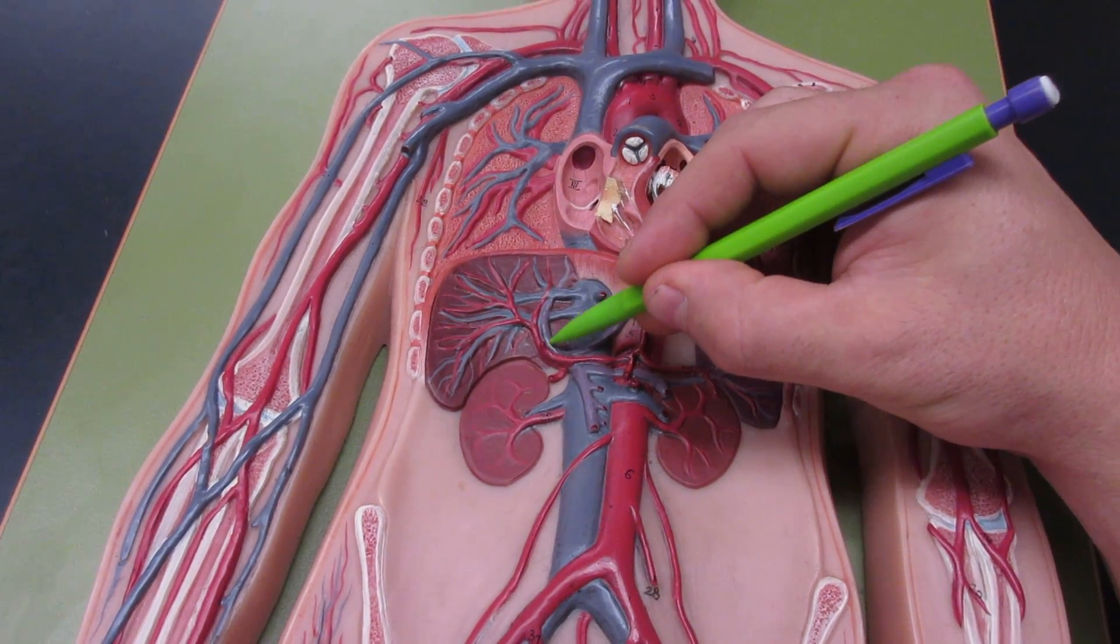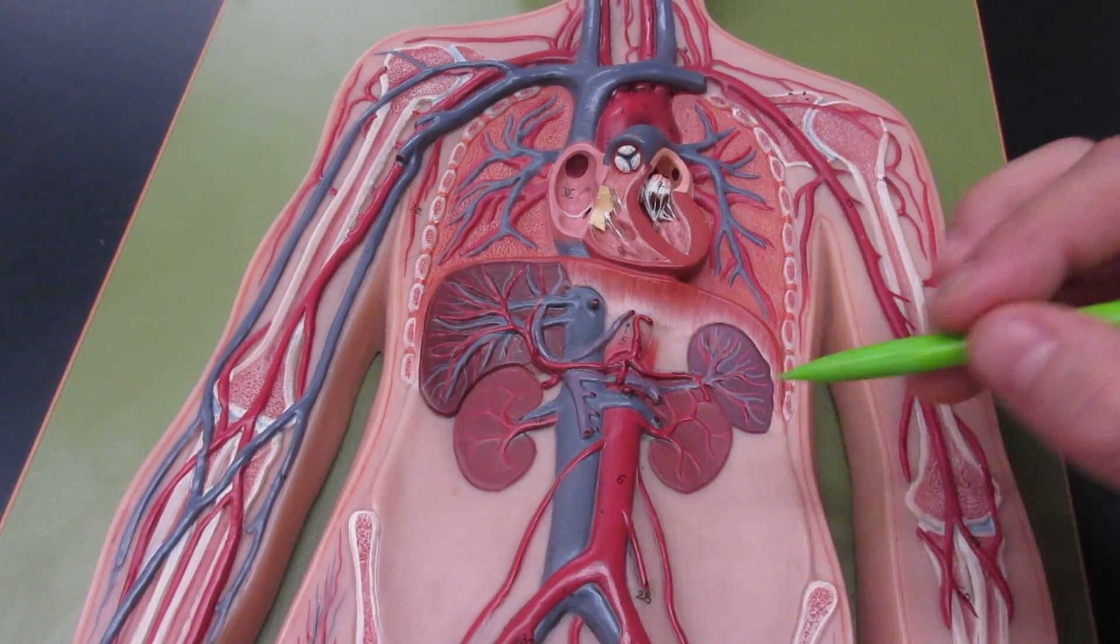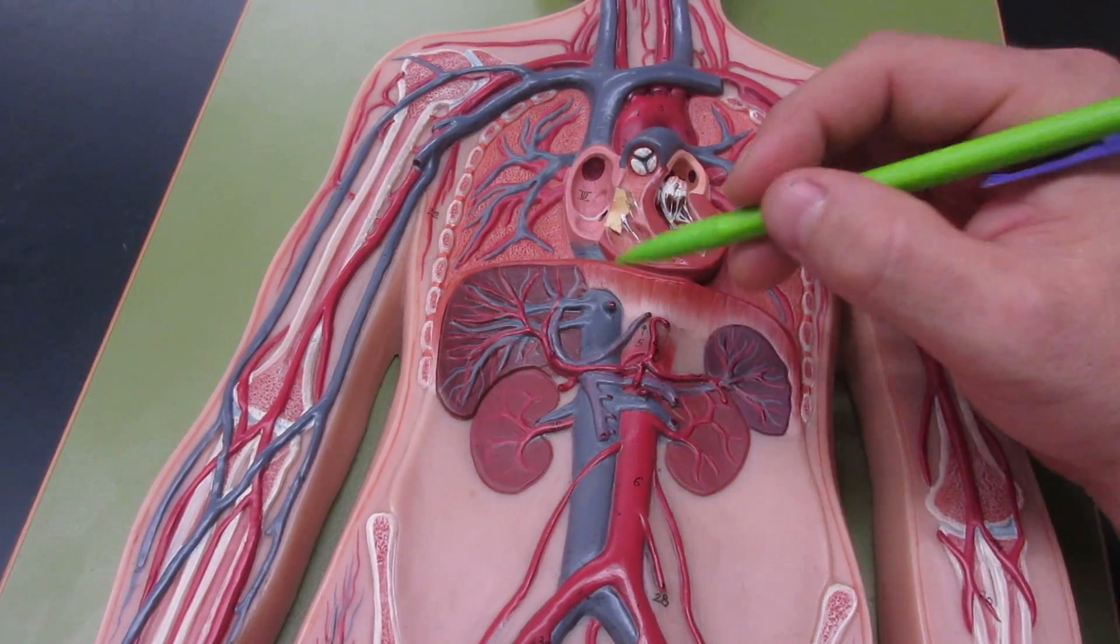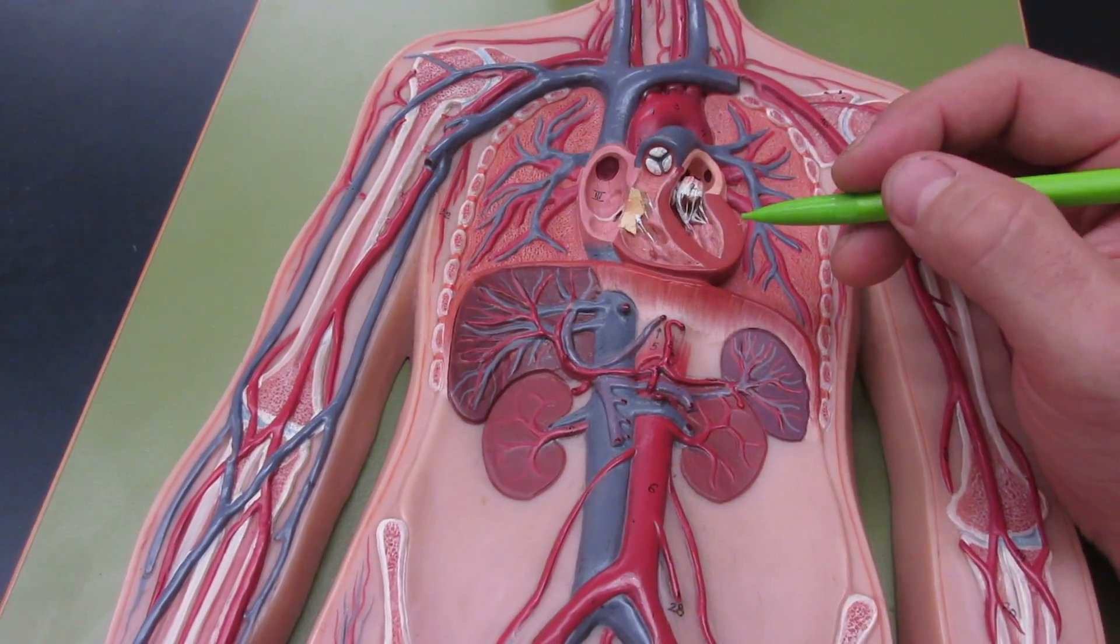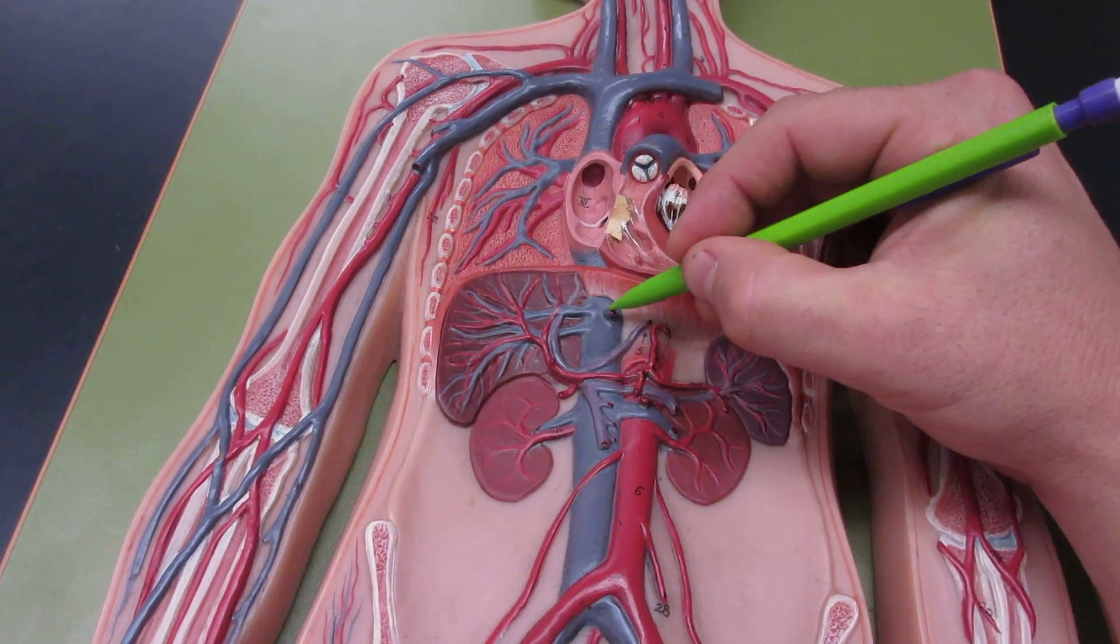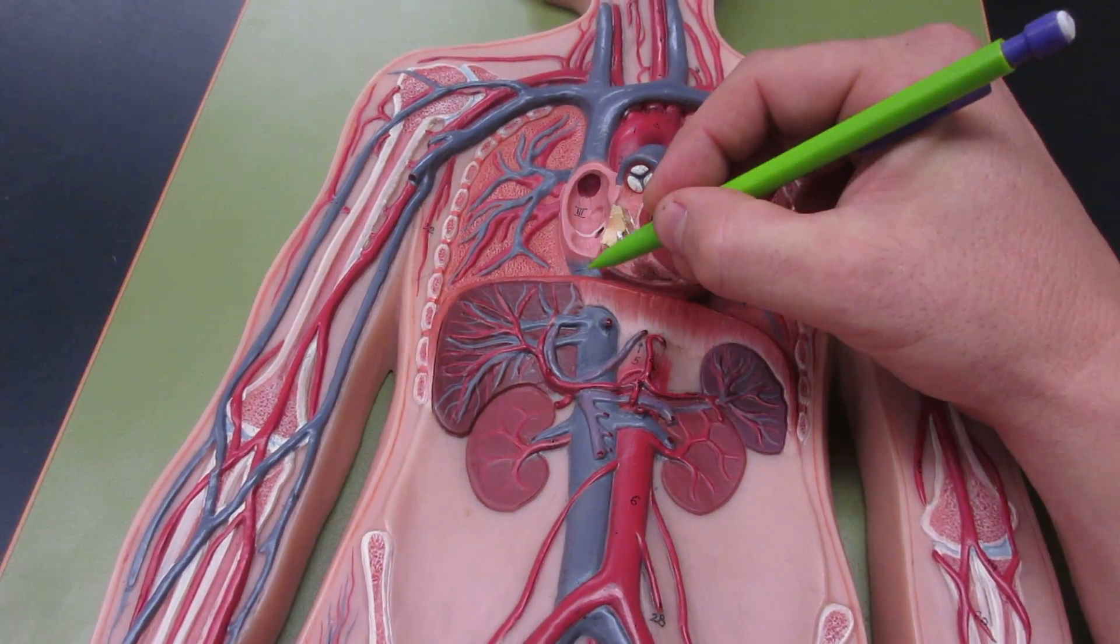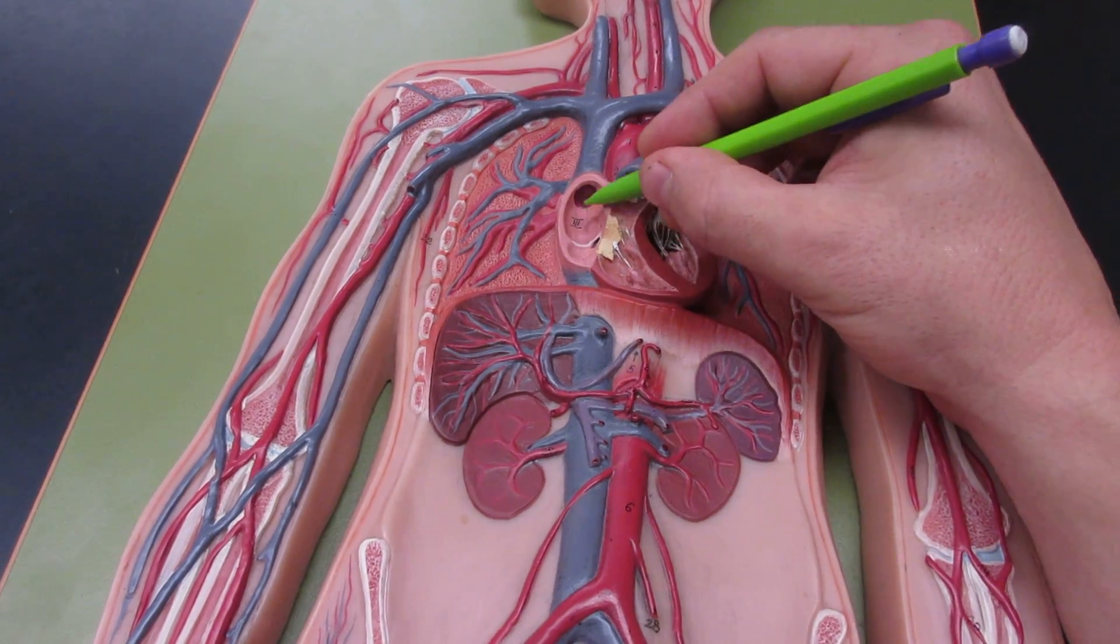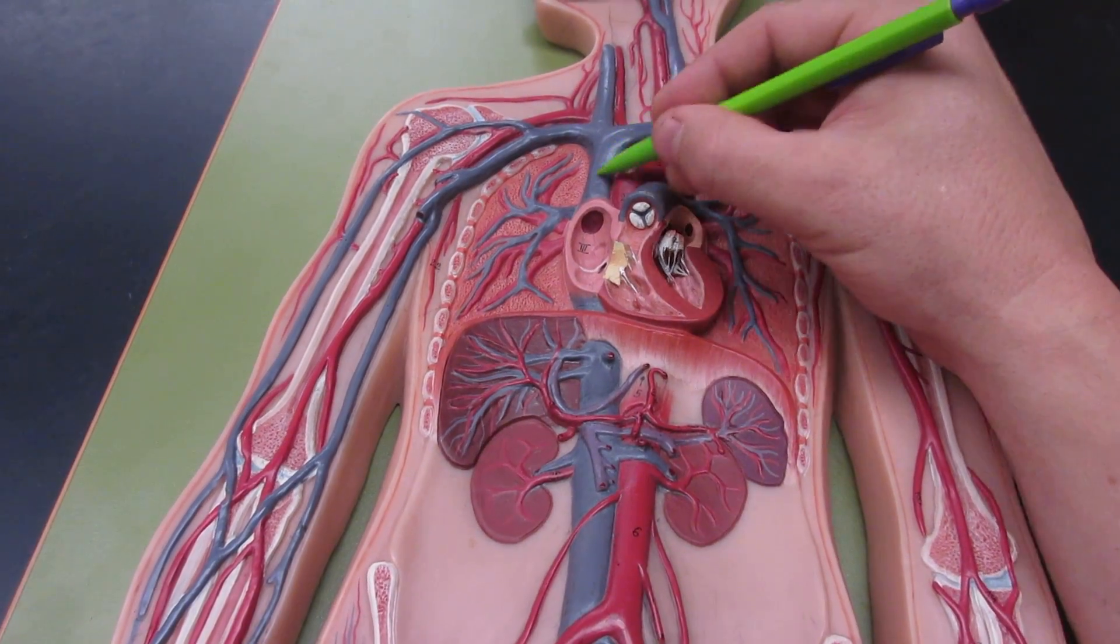All the blood from the intestines has to go to the liver before it returns to the heart, and then from the liver it goes into these hepatic veins which go into the vena cava. So this inferior vena cava goes into the right atrium and so does the superior vena cava.